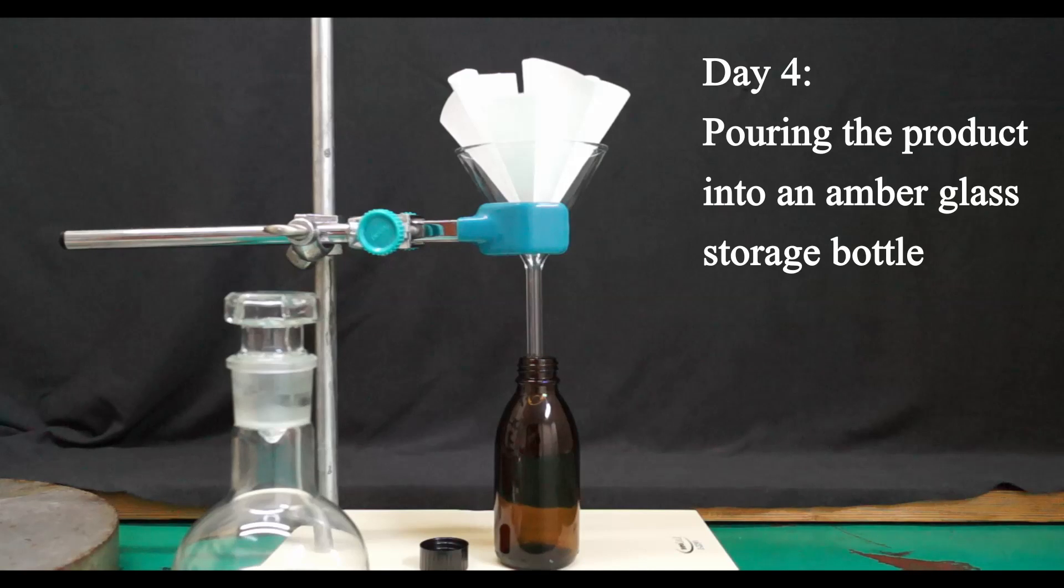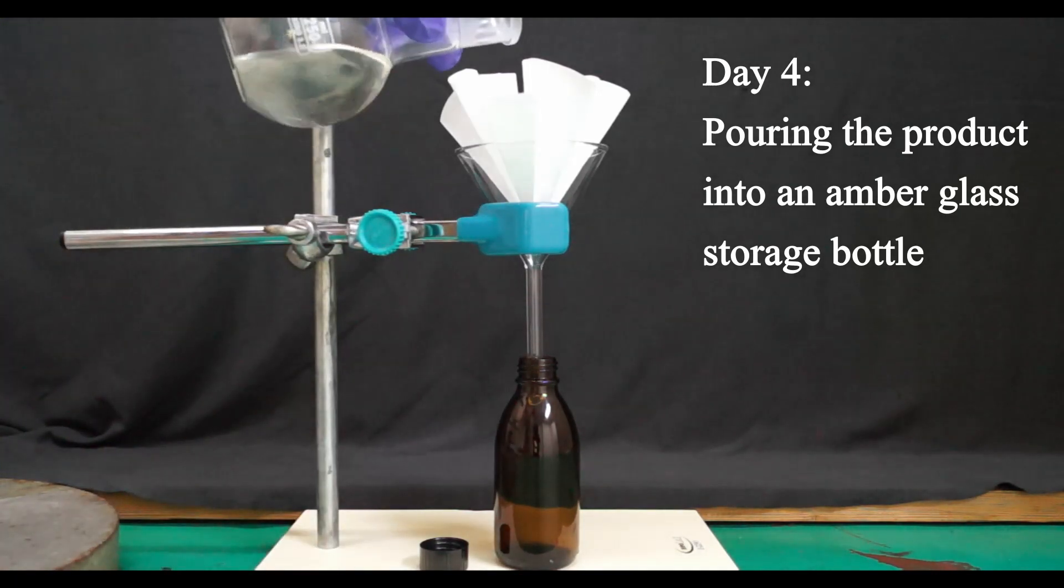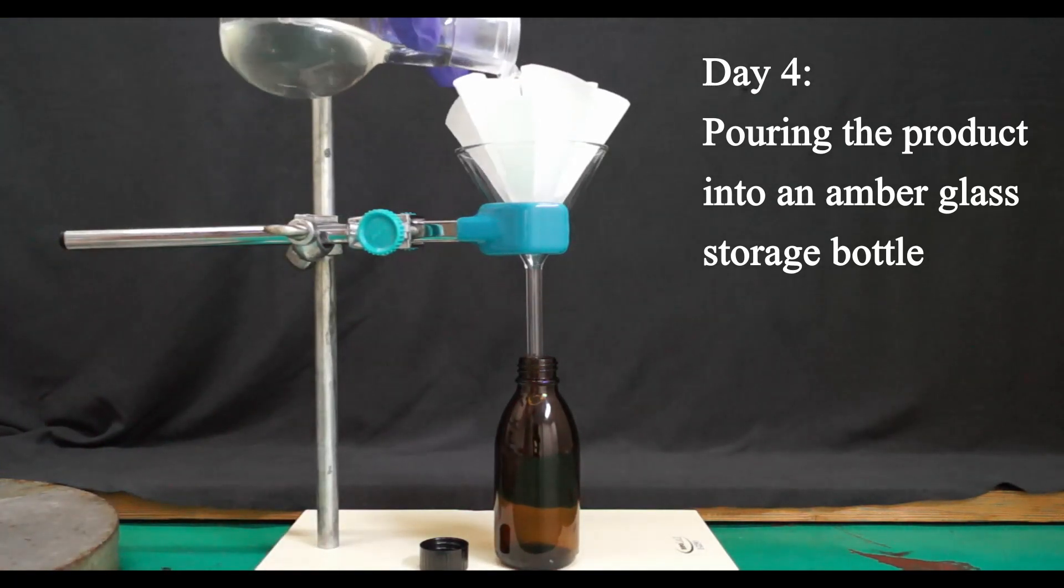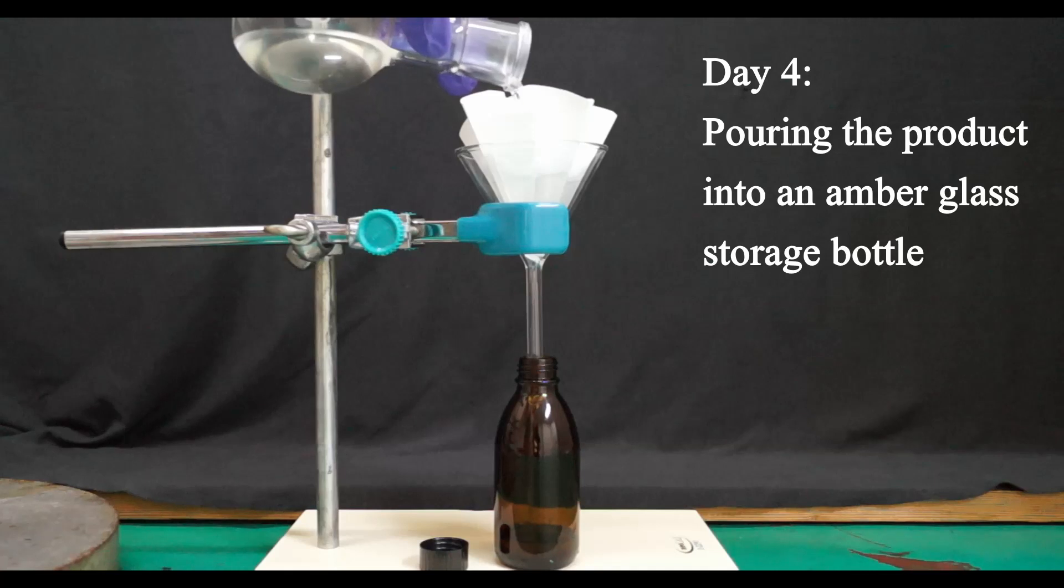I poured my product in a pre-weighed amber glass storage bottle. I got 89.5 grams of product. This represents a 28% yield, based on the amount of TCCA used in this reaction. I will use this product in further reactions, and if it performs as expected, then I will be more confident that the produced benzyl chloride is of sufficient purity.